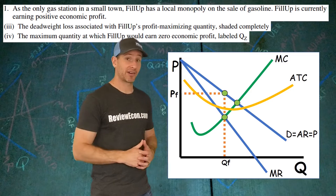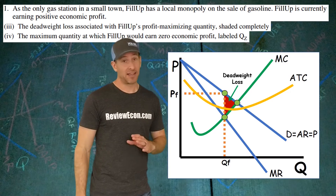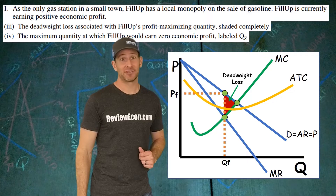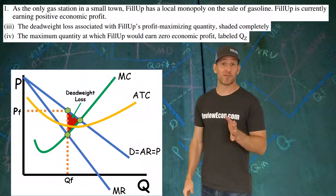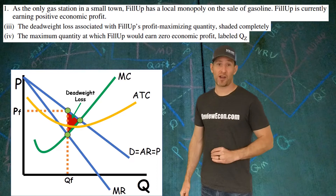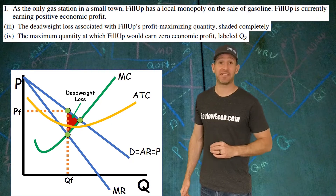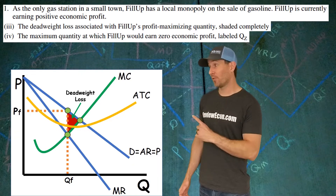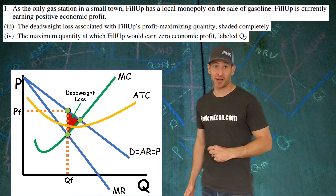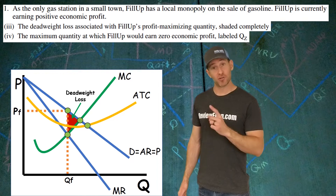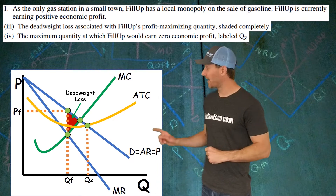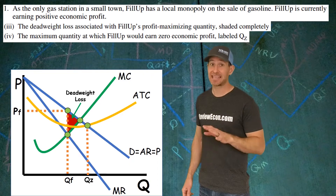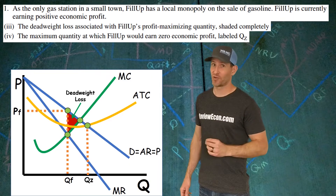If there were numbers you might be asked to calculate the dead weight loss, but not here. For part four, find the largest quantity where this firm breaks even or earns zero economic profits. Find the point where the average total cost curve equals the demand curve, drop down to the axis — that is your break-even quantity, where ATC equals price.